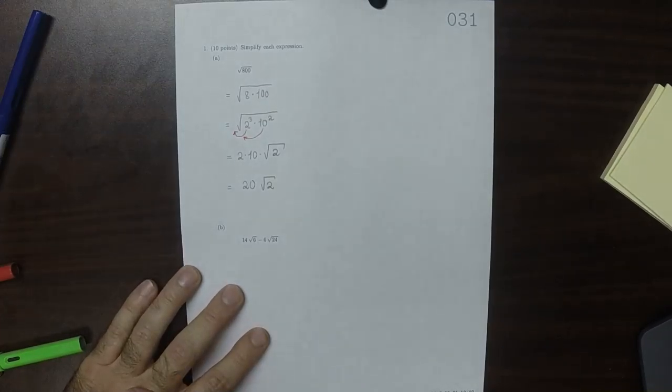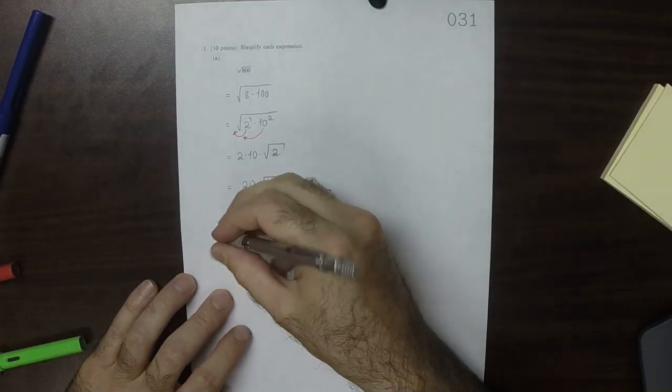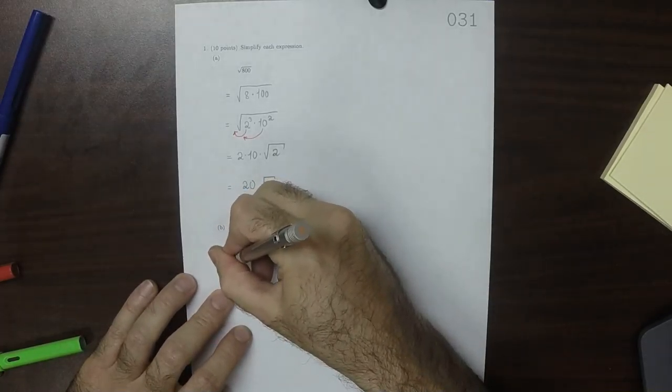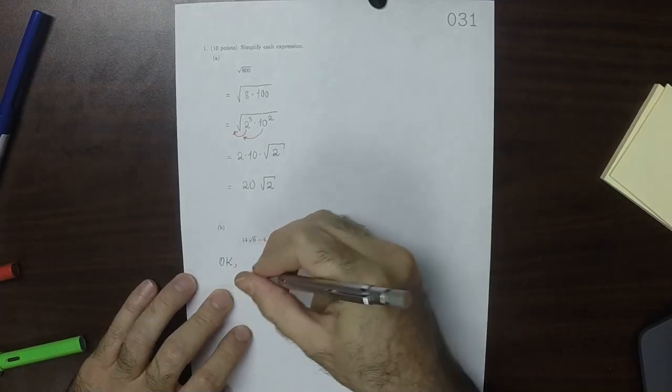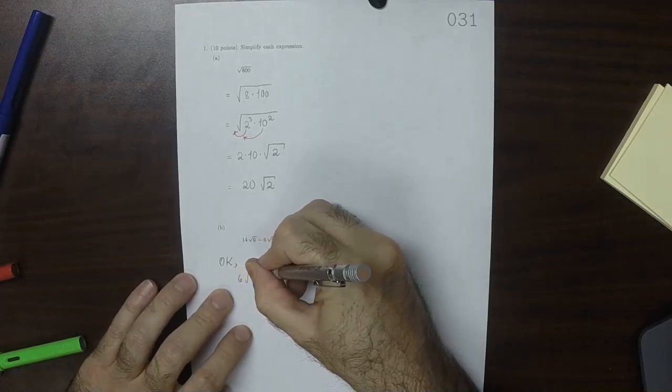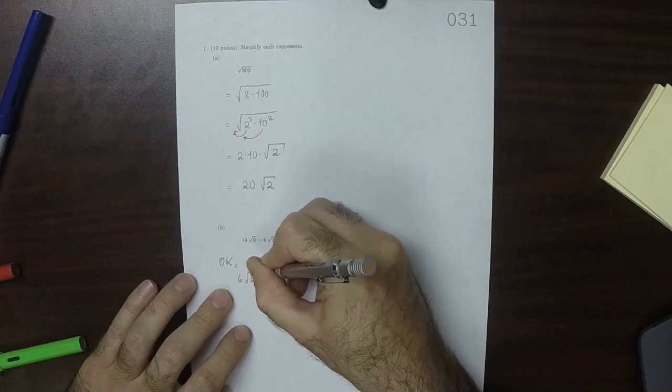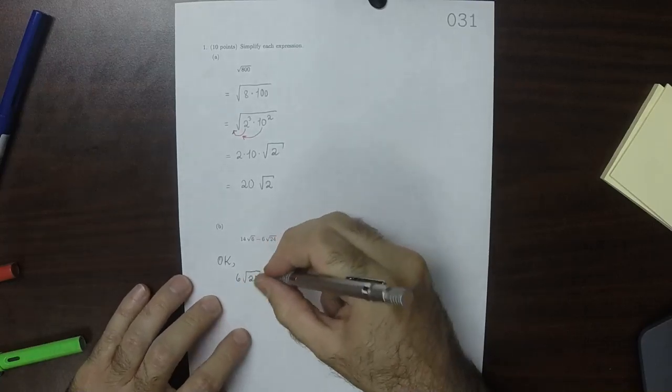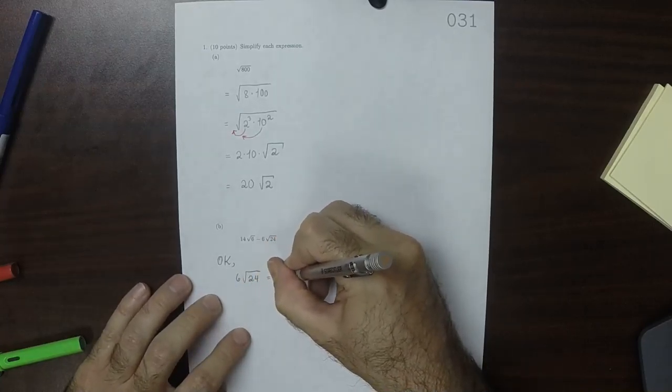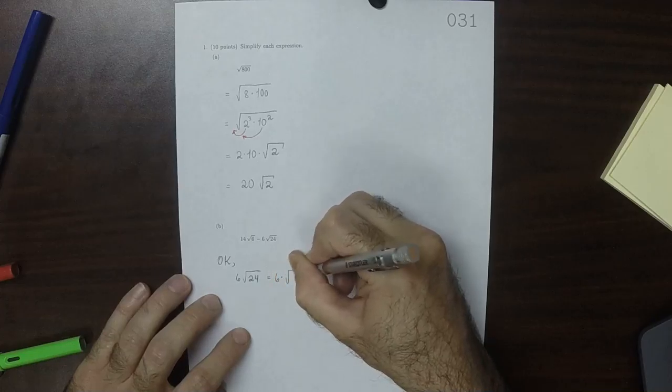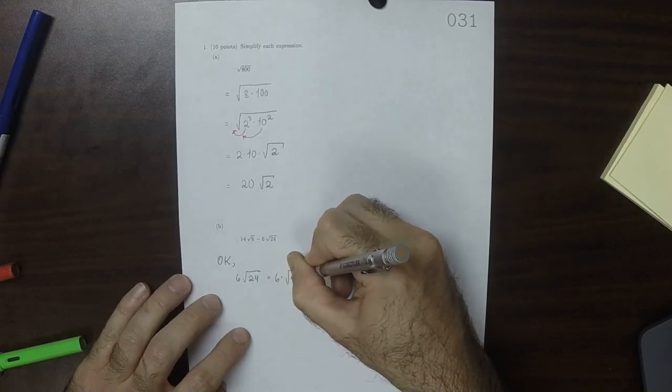OK, for this one, we could take 6 square root 24, and observe that that is 6 multiplied by the square root of 4 times 6.